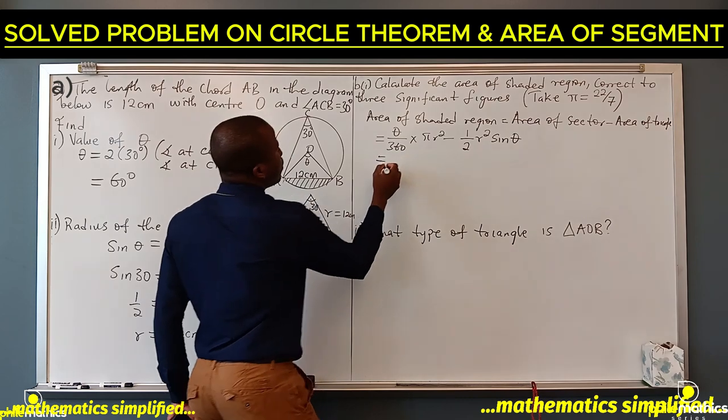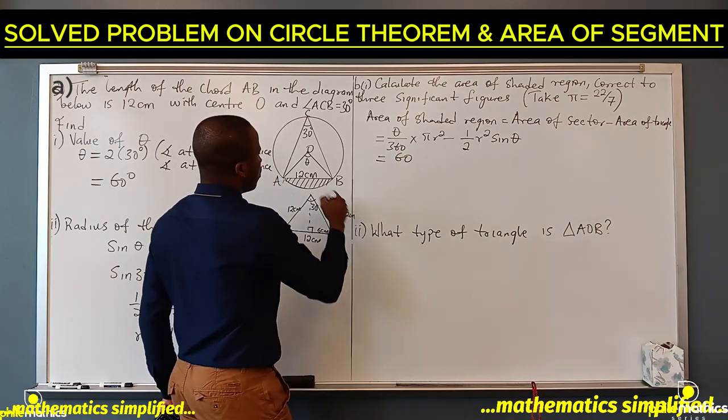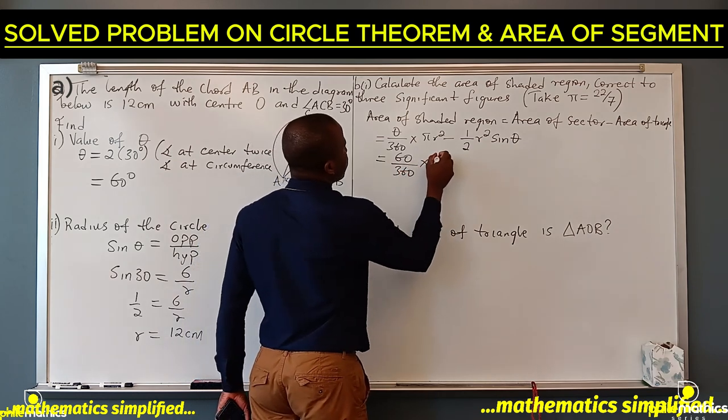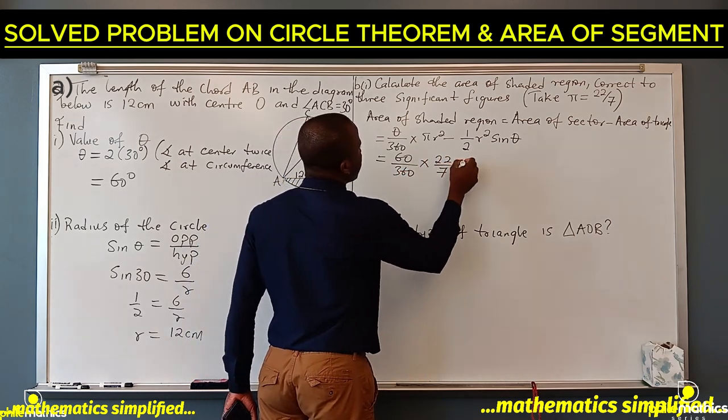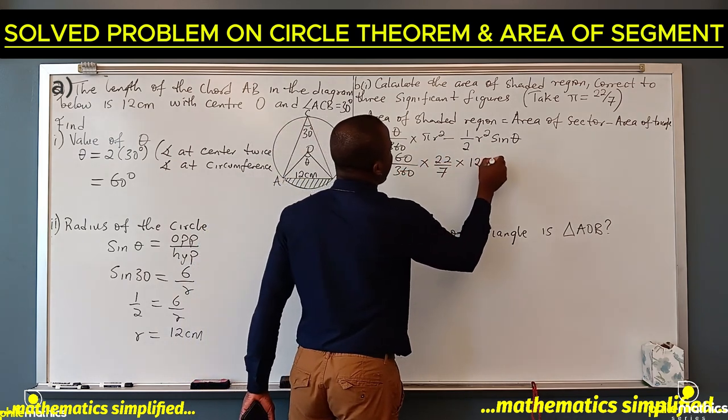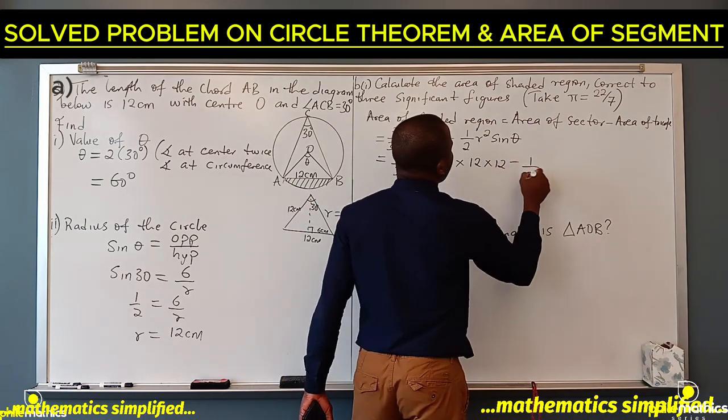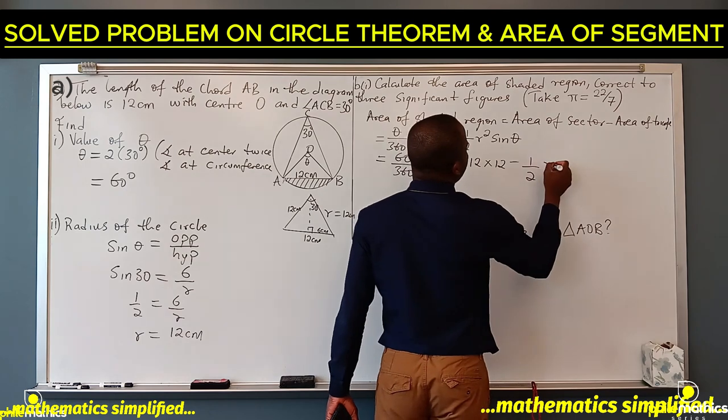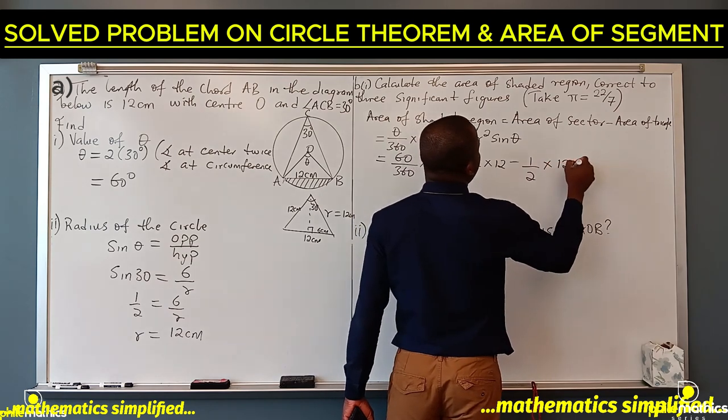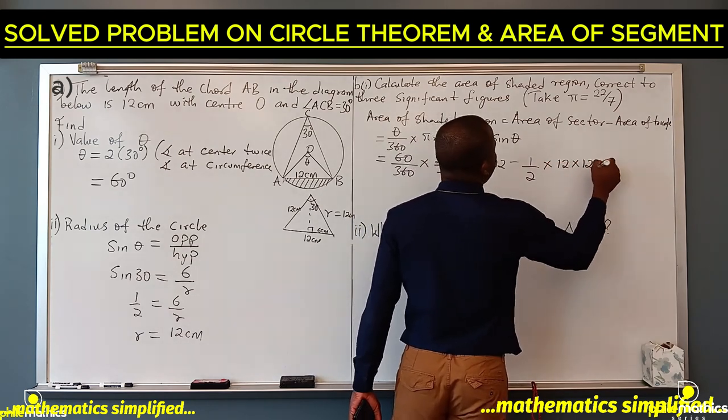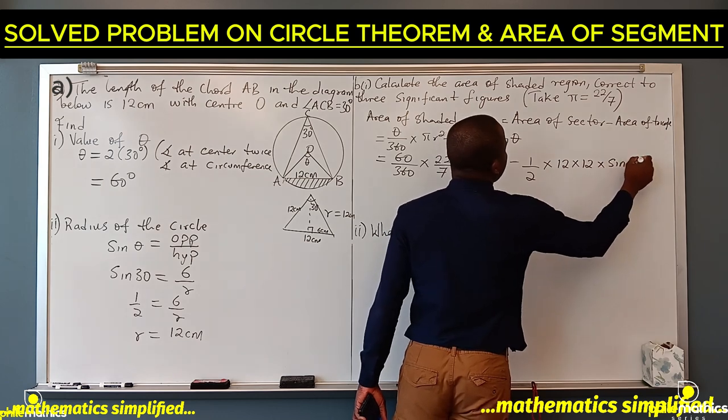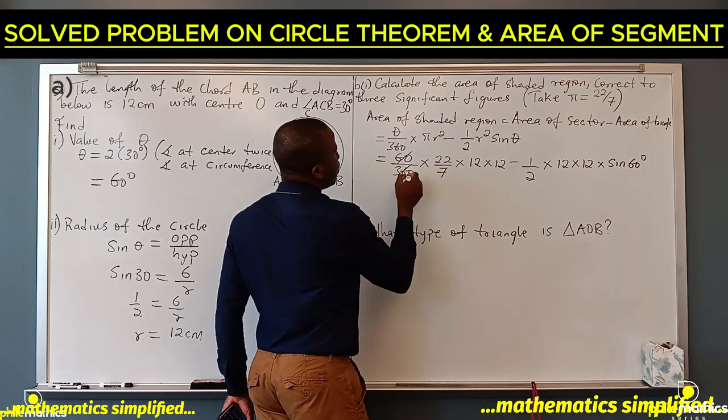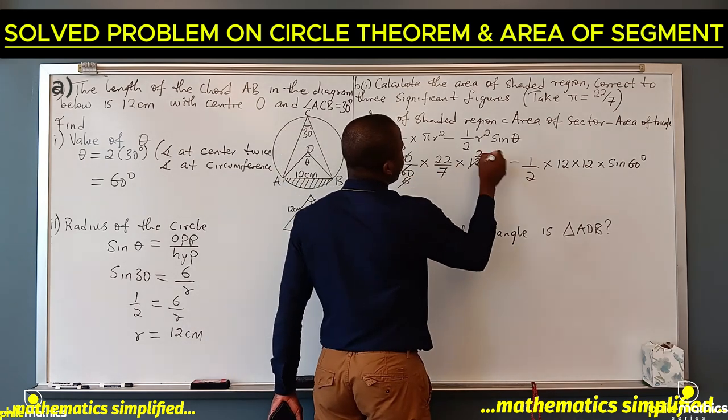So theta is 60 over 360 times 22 over 7 times 12 times 12 minus 1 over 2 times 12 times 12 times sine 60 degrees. And so this is 6, this is 2.